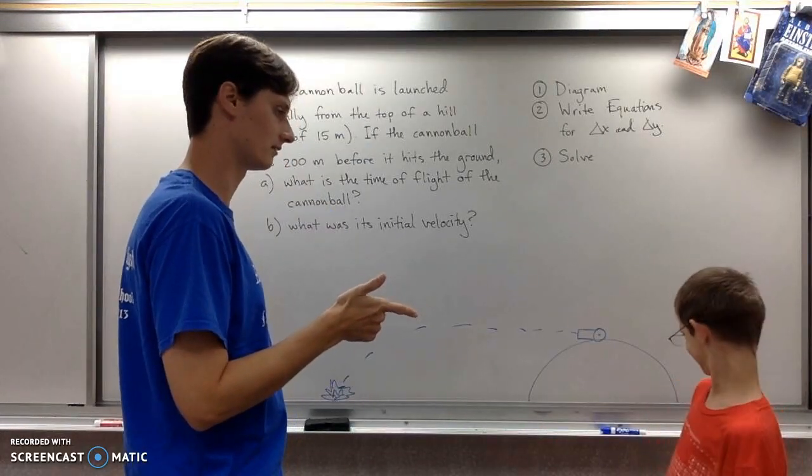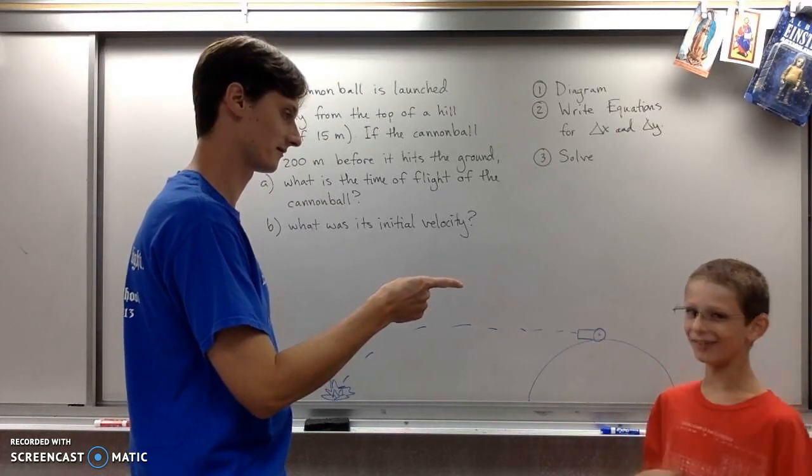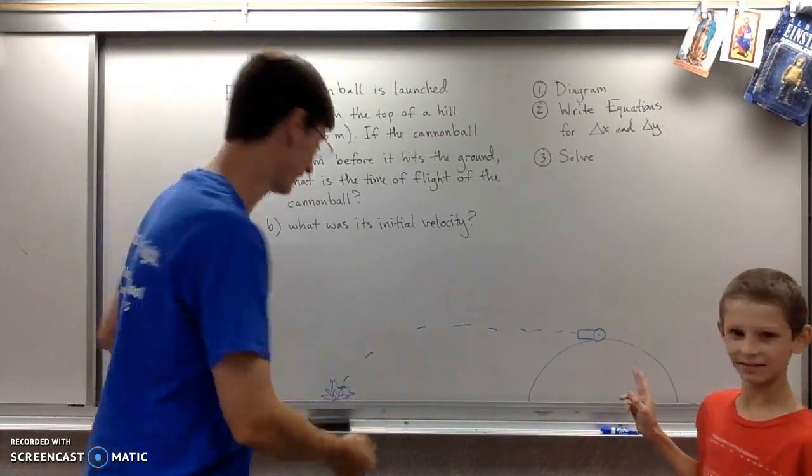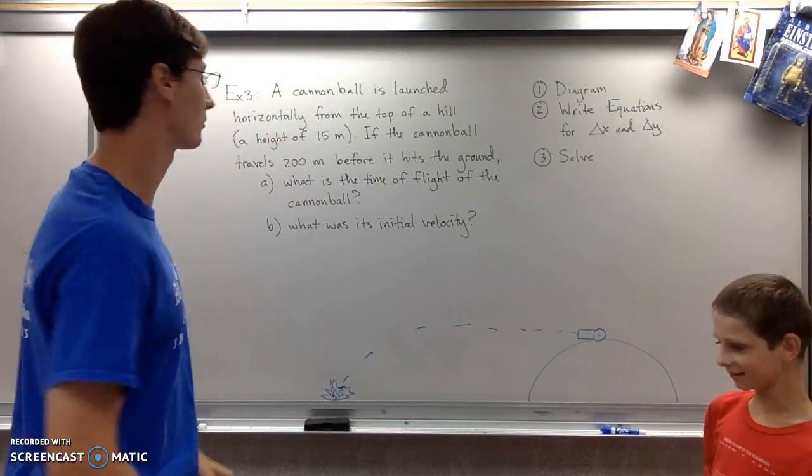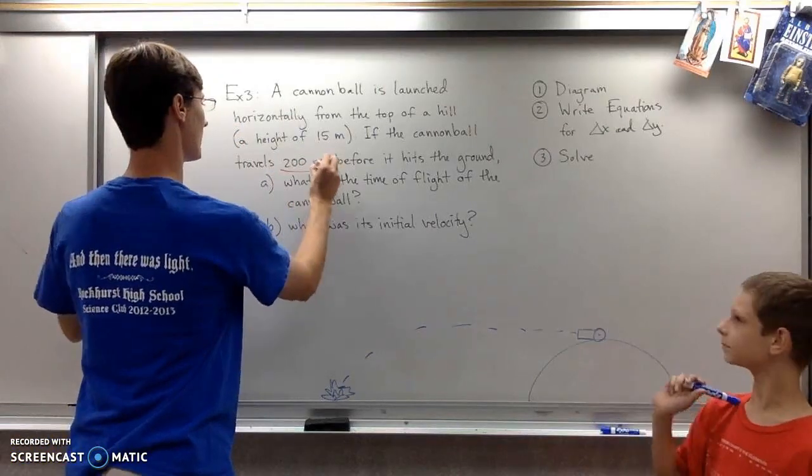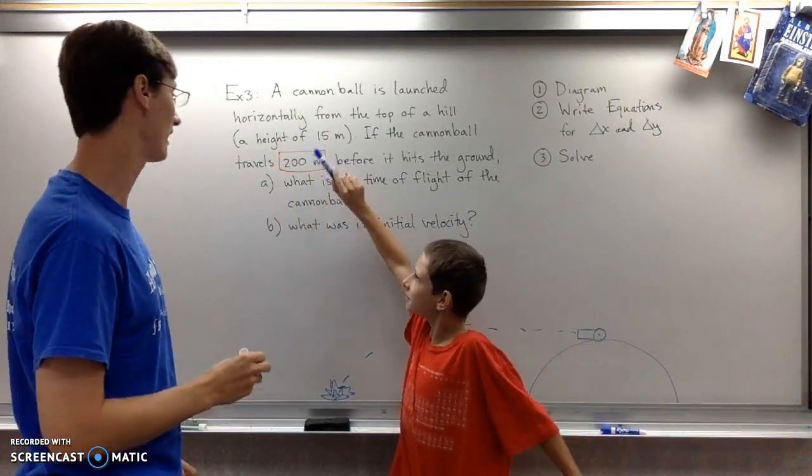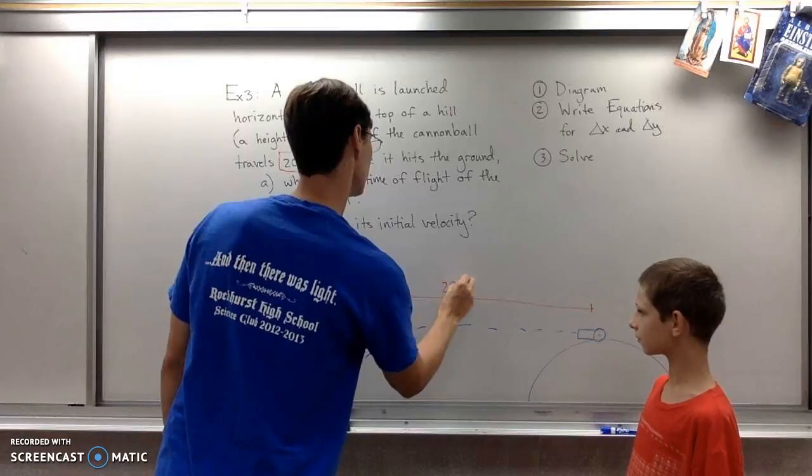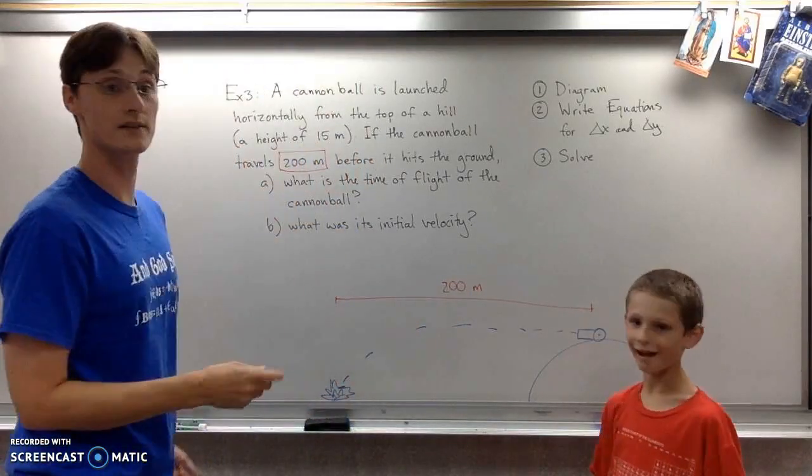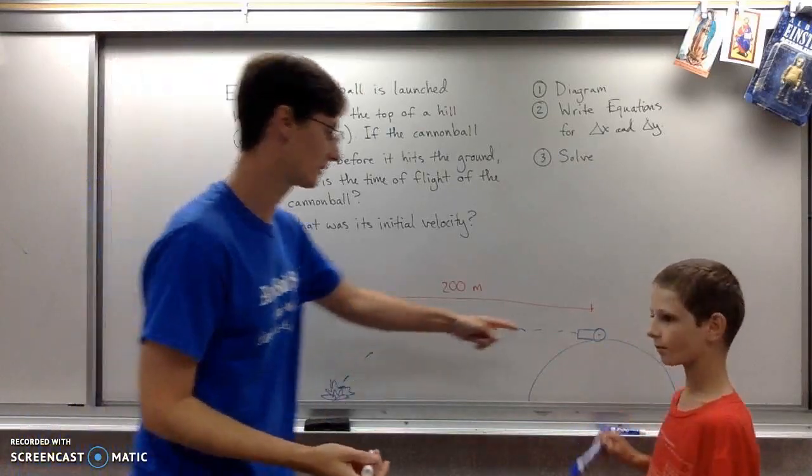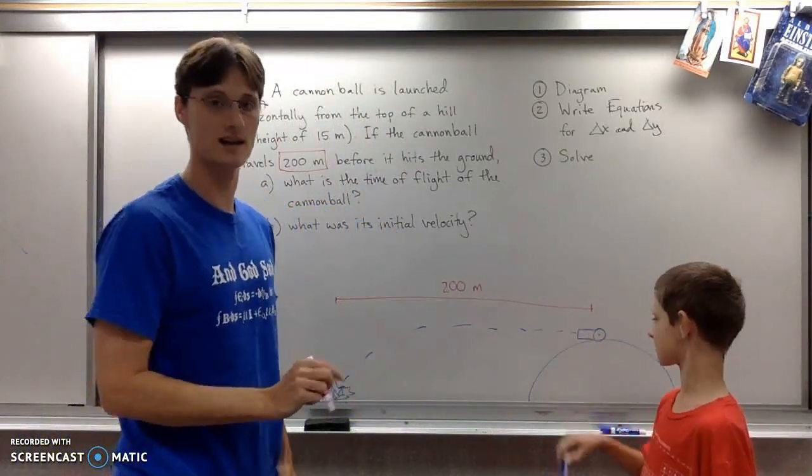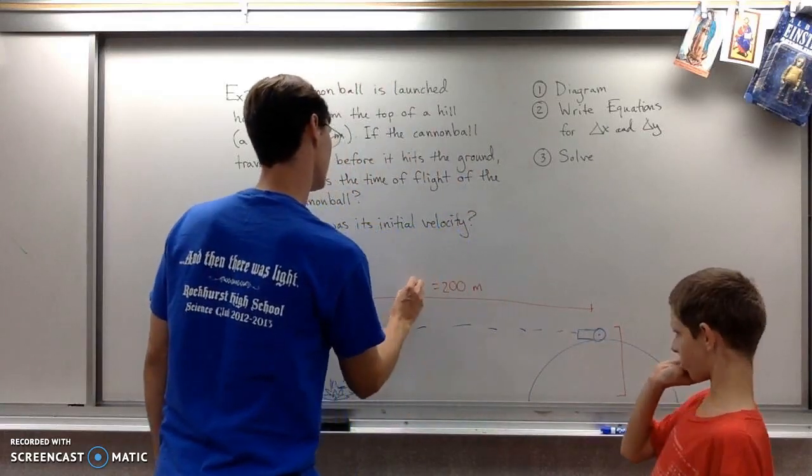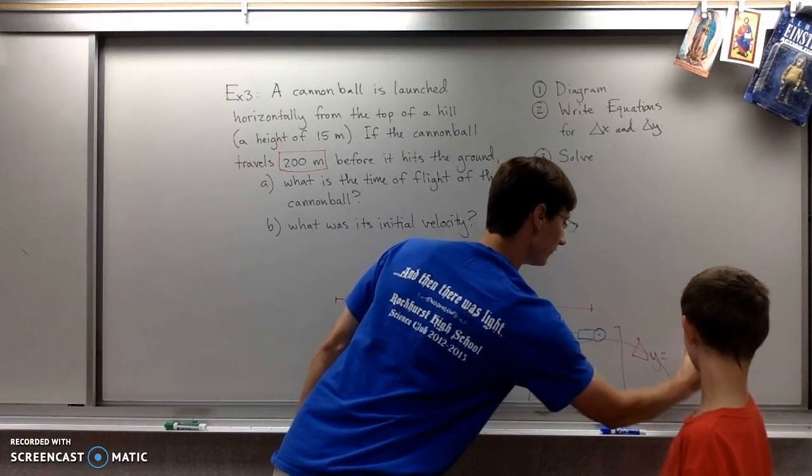Wow, that was fast. Give me my glasses back. Now that we have a diagram of a cannon on a hill, let's start labeling quantities from the problem. The cannonball travels 200 meters before hitting the ground. The height of the hill is 15 meters, so the vertical displacement is 15 meters.